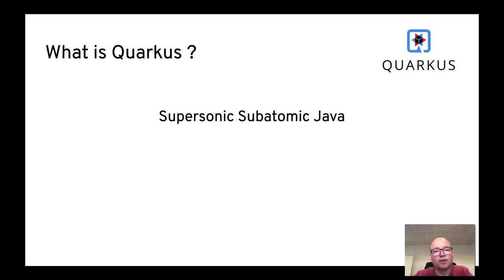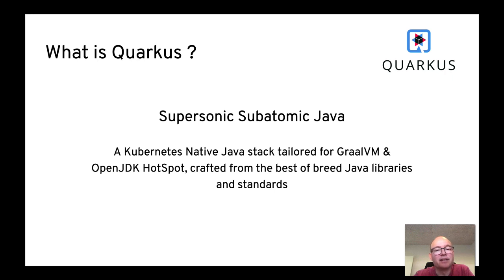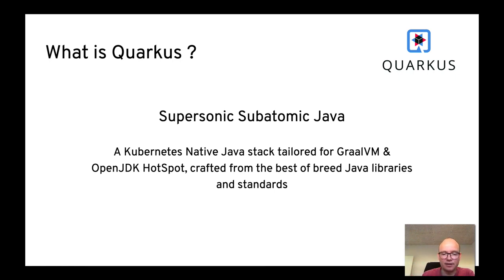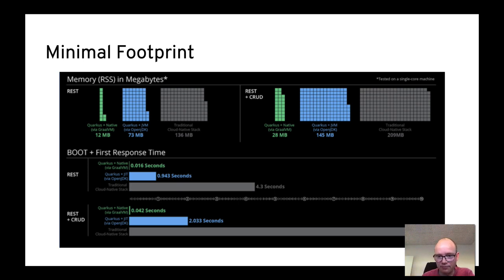Quarkus tries to address those problems from a Java point of view. On the website they call it 'supersonic subatomic Java' — a Kubernetes-native Java stack tailored for GraalVM and OpenJDK HotSpot, crafted from the best-of-breed Java libraries and standards. In short, it's just fast Java. Fast Java in two modes: native mode with GraalVM compilation, which is the fastest but the hardest to achieve, and JVM mode — an optimized JVM mode — which is really awesome and what many people are using.